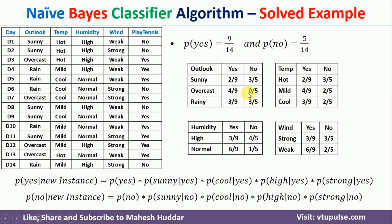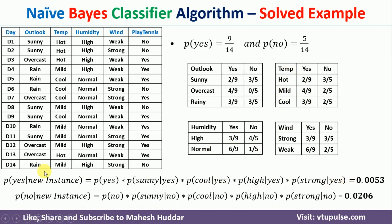Once all probabilities are calculated and substituted into the equation: probability of yes is 9/14, probability of sunny given yes is 2/9, probability of cool given yes is 3/9, probability of high given yes is 3/9, and so on. The result is: probability of yes given the new instance is 0.0053, and probability of no given the new instance is 0.0206. Since probability of no is greater, the new example is classified as no.